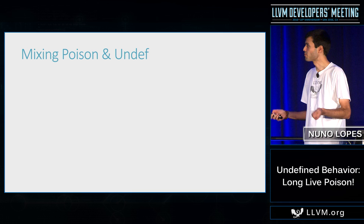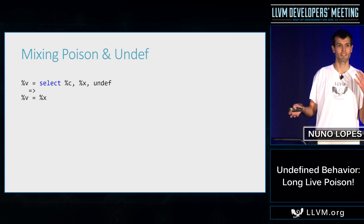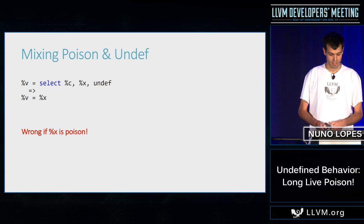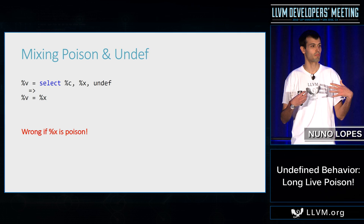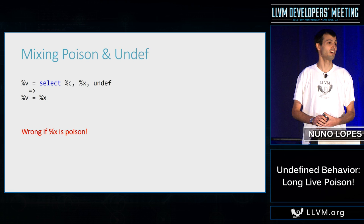Another problem: mixing poison and undef becomes tricky. InstCombine today does this transformation on a select with undef because undef can take any value, including x, so we can replace the select with x. But this is wrong if x is poison, because poison is strictly more powerful than undef — you cannot replace undef with poison when the condition is false. Even these simple transformations that InstCombine is doing today are wrong.